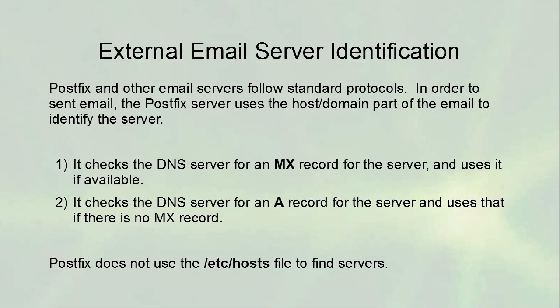For external email service identification, Postfix uses the host/domain part of the email address to locate the destination server. For example, for 'bob@example.com', it first checks for an MX record for example.com in DNS. If no MX record is found, it falls back to an A record. If neither is found, the mail will not be sent. Postfix does not use the /etc/hosts file, so make sure your DNS service is properly configured.